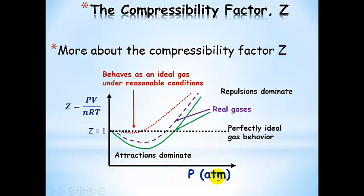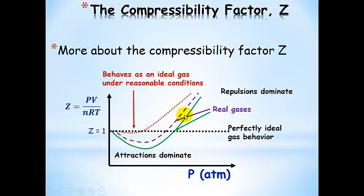If we keep on increasing the pressure, then our real gases enter the range of conditions where repulsions dominate — where the molecules really do take up space. This is the most interesting effect, and usually what we focus on. The volume that the gas molecules take up doesn't make a big difference until very high pressures. It's these attractive interactions that change a gas from ideal gas behavior to real gas behavior.